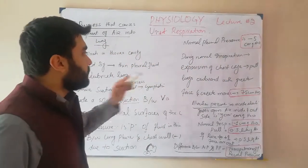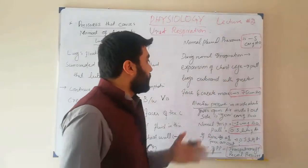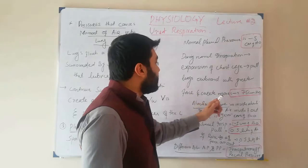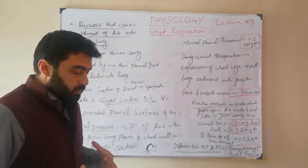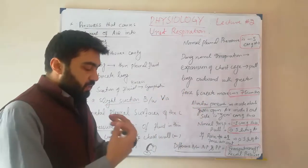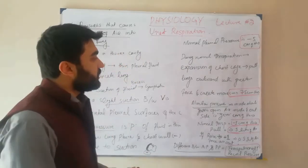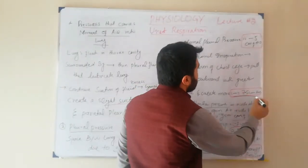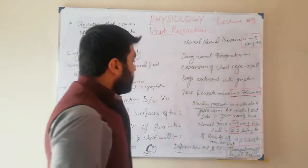During inspiration, expansion of the chest cage pulls the lung outward with greater force and creates more negativity. When we inspire, we pull our chest cage outward, which pulls the lung outward with great force and makes the pleural pressure more negative — it reaches minus 7.5 cm of water. Normally it is minus 5 cm of water.